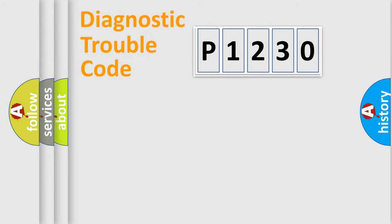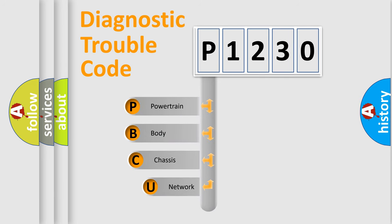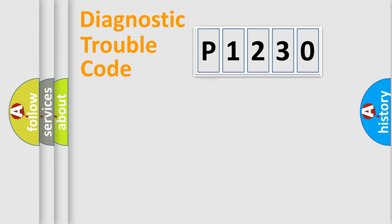Let's do this. First, let's look at the history of diagnostic fault code composition according to the OBD-II protocol, which is unified for all automakers since 2000. We divide the electric system of an automobile into four basic units: Powertrain, Body, Chassis, and Network.